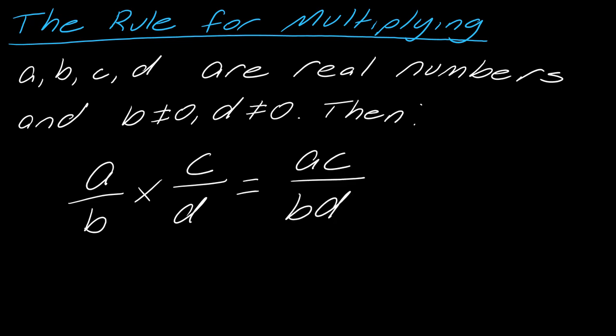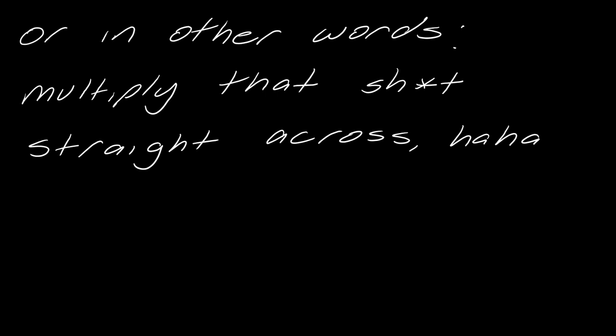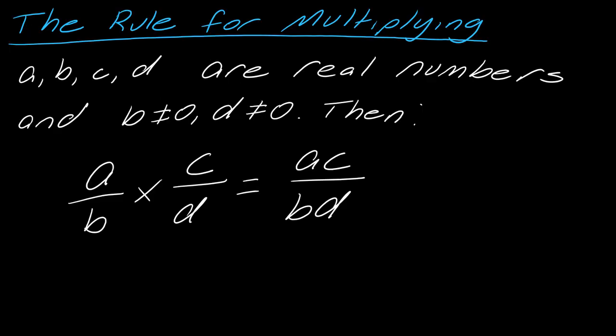Pause the video and look at this for a moment. Think about how you would describe what's happening here without using any math language — not the letters, just what is actually happening to them. Well, what we're doing is multiplying straight across: A times C is AC, and B times D is BD. So we just multiply everything straight across.